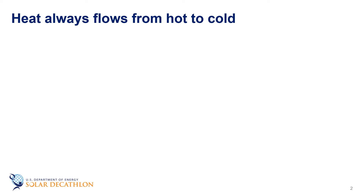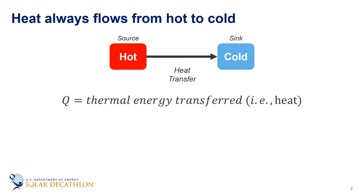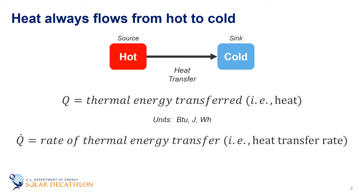Nature strives for equilibrium, so heat always flows from something that is hot to something that is cold. Technically, heat is the process of transferring thermal energy from a higher temperature source to a lower temperature sink, but this process is commonly referred to as heat transfer. We often express this symbolically as Q to represent the amount of heat that has been transferred. It is measured in units of energy, such as BTUs, joules, or watt hours. When we talk about the rate of heat transfer, we add a dot above the Q to represent the time rate of change of Q — this is called Q-dot. The units are BTUs per hour, or joules per second, which is the same as a watt.